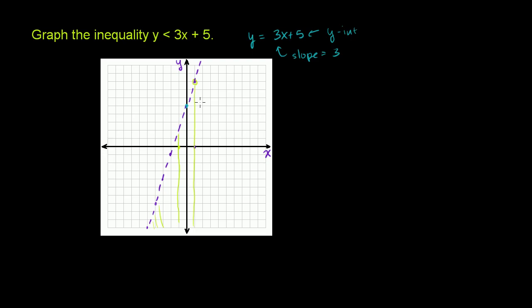Let me draw it a little bit neater than that. It's going to be this entire area that's under the line. I'll do it in this orange. It's a little easier to see. So this entire area under the line is y is less than 3x plus 5.